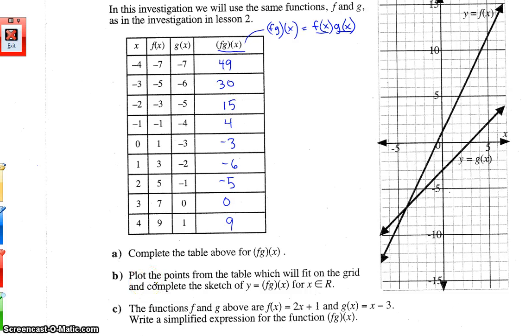Let's look at part B. Plot the points from the table which will fit on the grid, so they're acknowledging that this point and this point will not fit on the grid. And complete the sketch of y equals fg(x) for x as an element of the reals. That x as an element of the reals, they're telling you that it's a connected straight line. So we would connect the points and put arrows on the end like the line shown. So again, just like lesson two, we are plotting this x value with this y value. So the first point we would be able to plot would be negative 2, this x value, and comma 15, that y value. So I'm going to plot those points. There's the first one. And you guys do that as well, and we'll check back and see if we have the same graph.